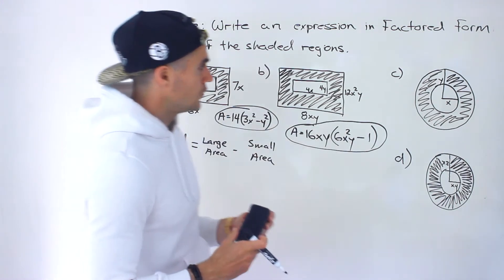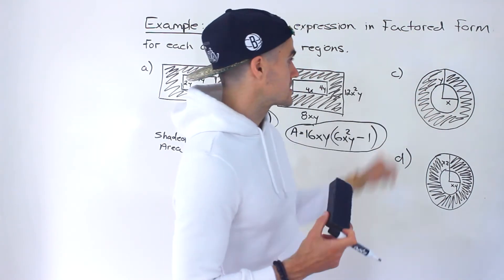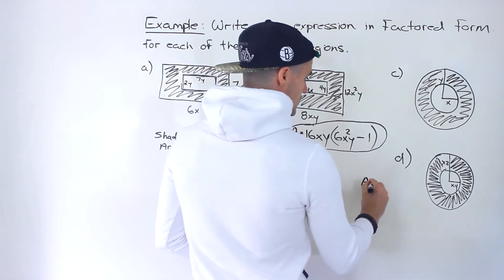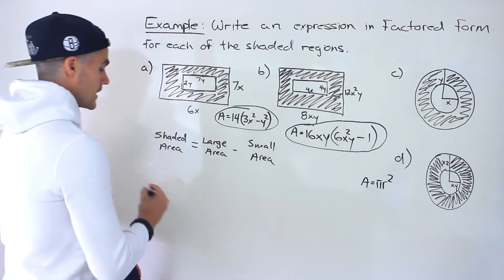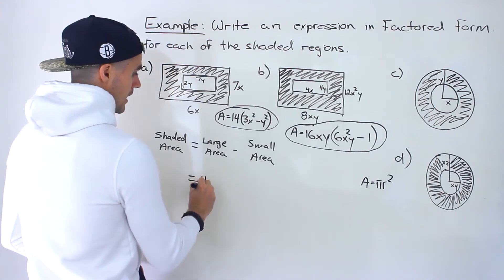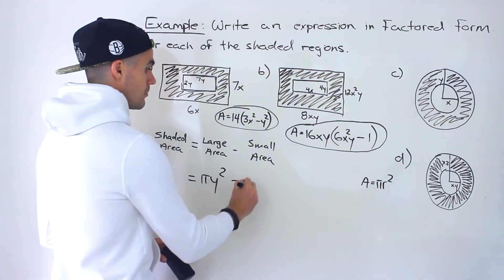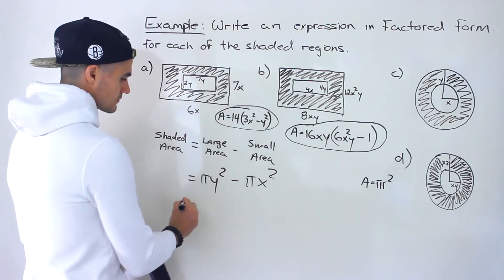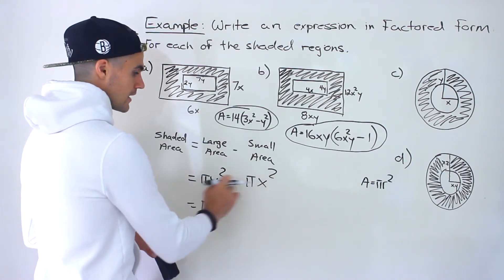For part C, we have a small circle with radius x and a large circle with radius y. Remember that the area of a circle is πr². So the large circle's area is πy² and the small circle's area is πx². The expression for the shaded region is πy² − πx².